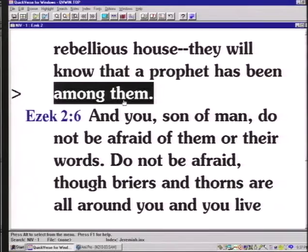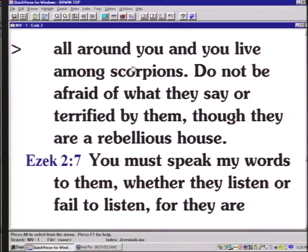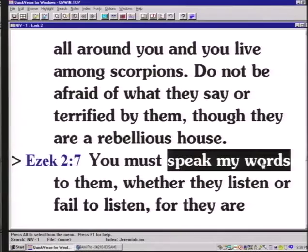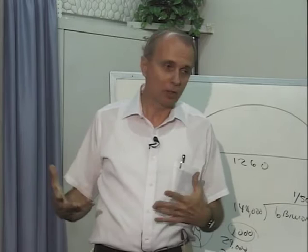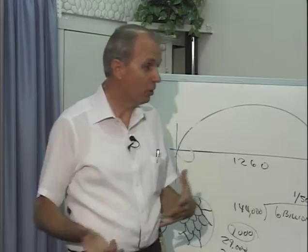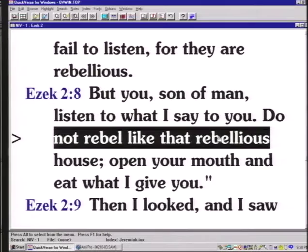And you, son of man, you do not be afraid of them or their words. Though briars and thorns are all around you, and you live among scorpions, do not be afraid of what they say, or be terrified by them, though they are a rebellious house. You must speak, what do these two words say right here? My words. God chose a timid man because a noisy man would probably use his own words. You must speak my words to them, and whether they listen or fail to listen, for they are rebellious.